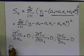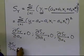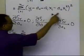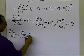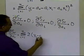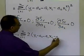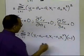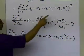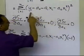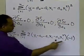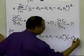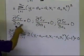Setting up the first equation: ∂SR/∂a0 = Σ(i=1 to n) 2·(yi - a0 - a1xi - a2xi²)·(-1) = 0. This comes from differentiating the squared residual with respect to a0, which gives a factor of 2 times the inner expression times minus 1.